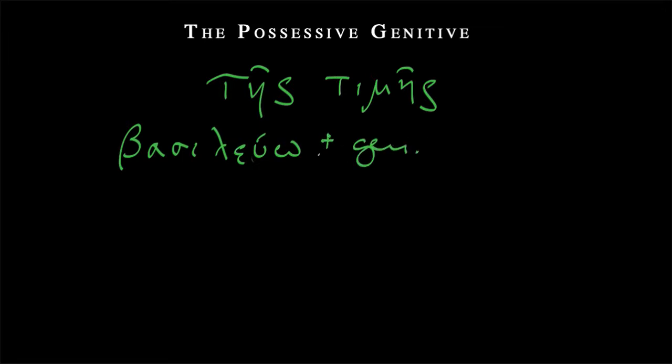So we've learned that the genitive form, let's take an example, tēs timēs, of honor could mean a lot of different things, can go with certain verbs. We've seen that the verb basileuō can take a genitive object, you can rule the country, etc. But one of the most common uses of the genitive is to be possessive.